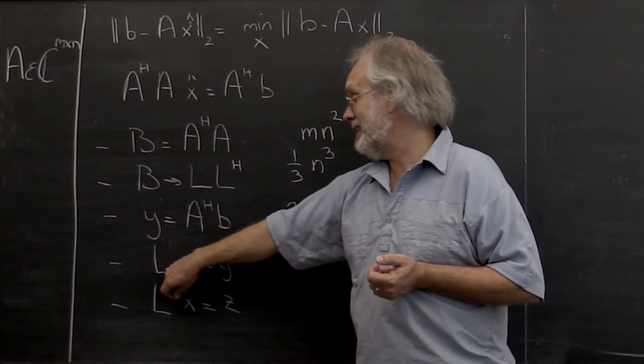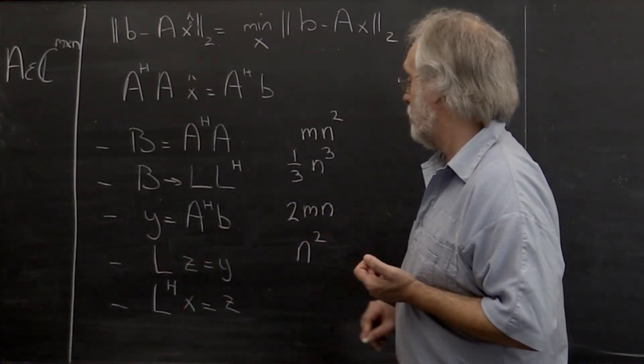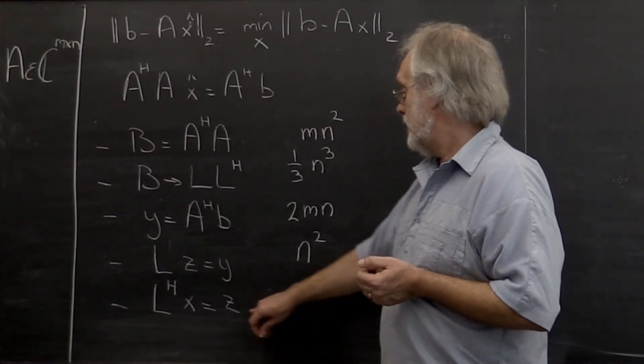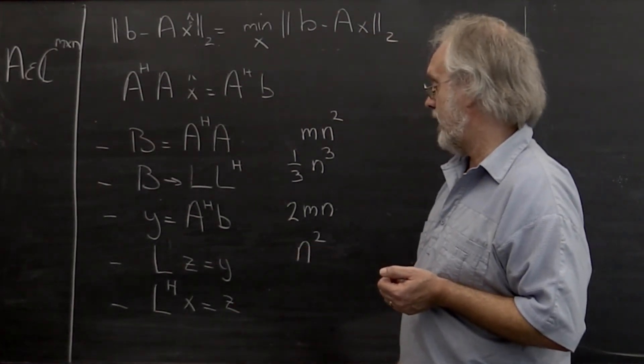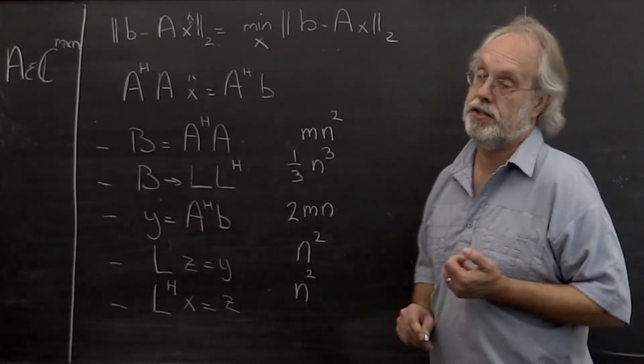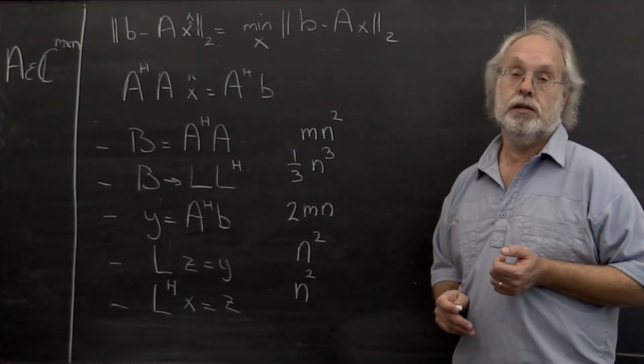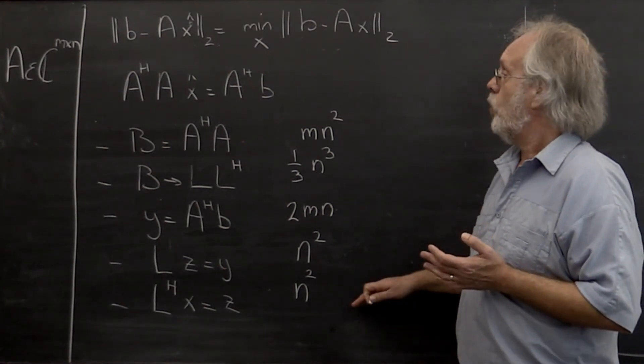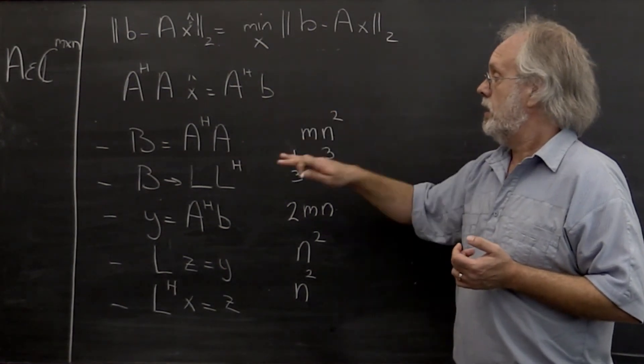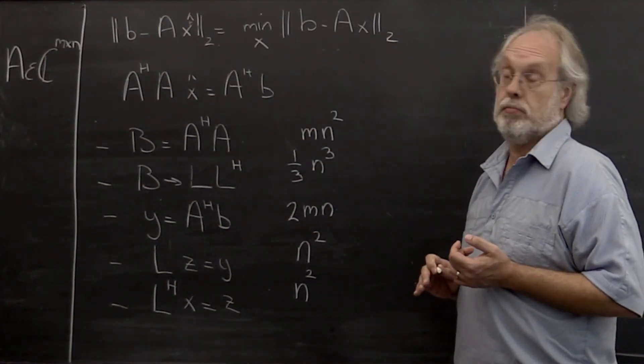Solving with an n by n triangular system is approximately n² floating point operations, and then solving an upper triangular system is n² floating point operations. So this breaks down the cost of the different parts when using the normal equations to solve the linear least squares problem.